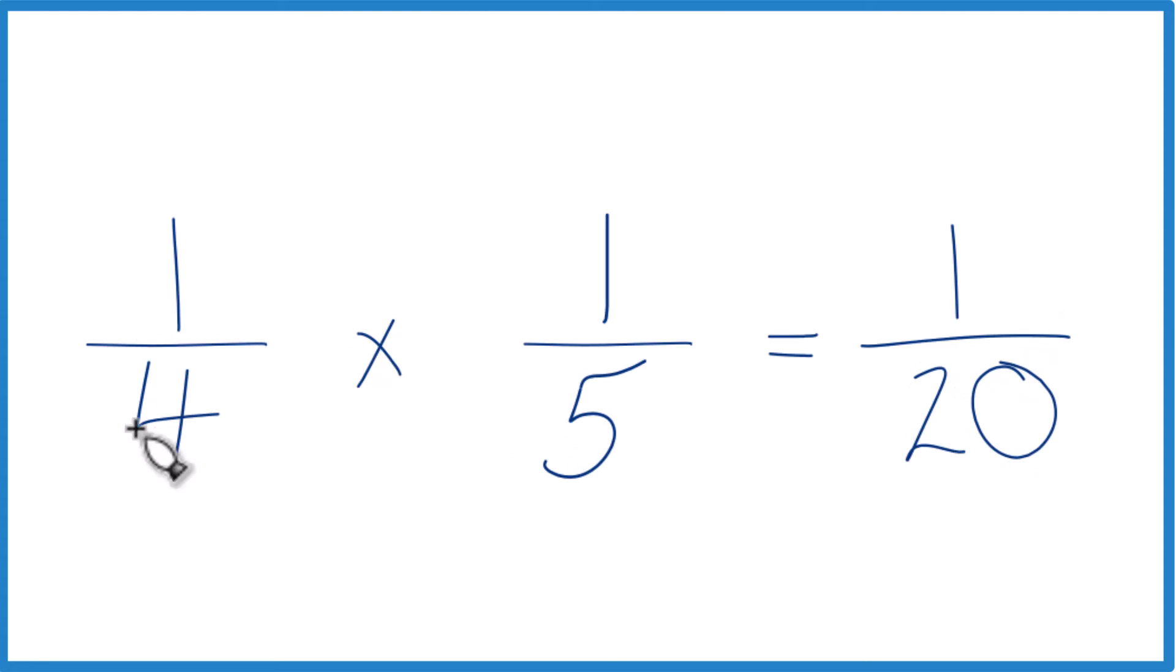One-fourth times one-fifth equals one-twentieth, or you could say one-fourth of one-fifth, that's one-twentieth. And it doesn't matter if you have one-fourth of one-fifth or one-fifth of one-fourth, the order really doesn't matter here because we're multiplying.